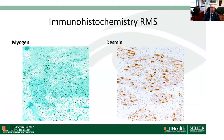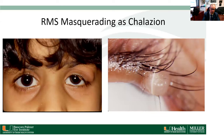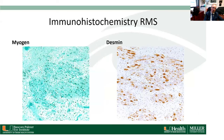Immunohistochemistry is often used to make the diagnosis. The stains we use are myogenin — staining positive — and desmin — also staining positive. These are markers for rhabdomyosarcoma that help differentiate it from other small blue cell tumors of the orbit.